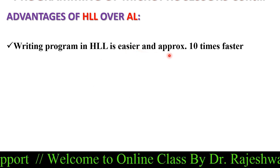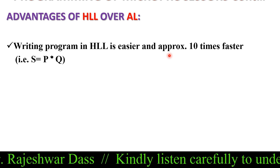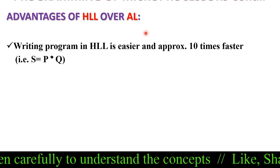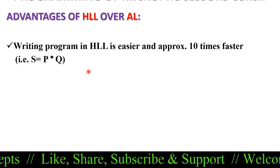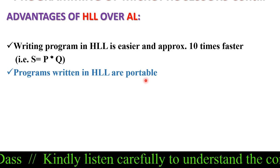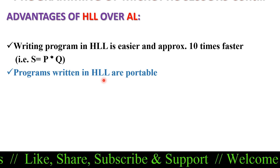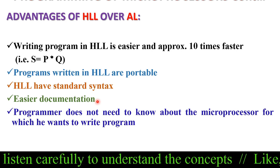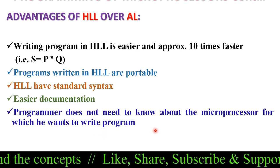Advantages of high level language over assembly language: writing programs in high level language is easier and approximately 10 times faster. For example, to multiply two numbers in assembly language you need 7 to 8 instructions, while in high level language you just write one statement such as S = P * Q. Programs written in high level language are portable — not machine dependent — so a program written for the 8085 will also run on the 8086 or any other microprocessor.